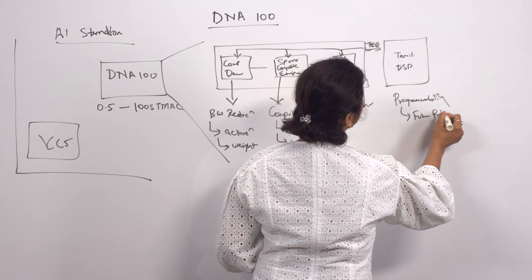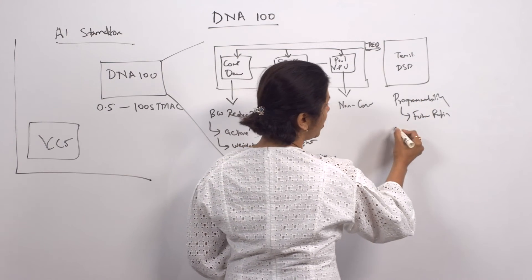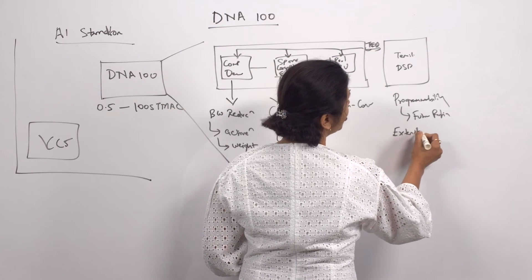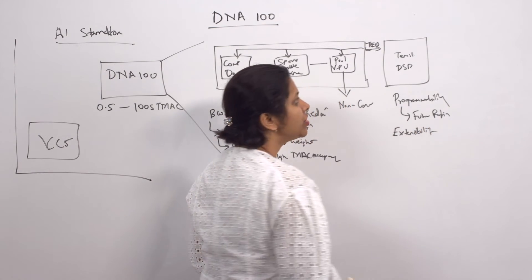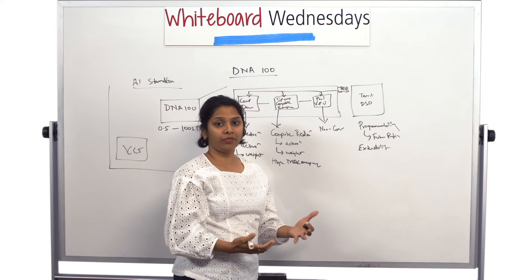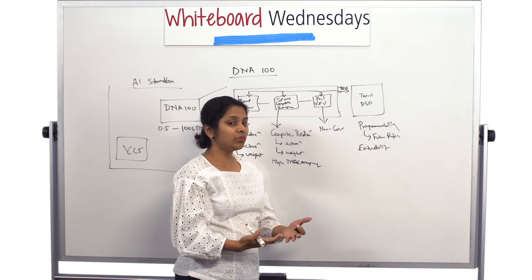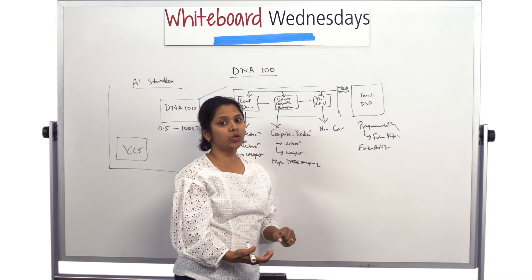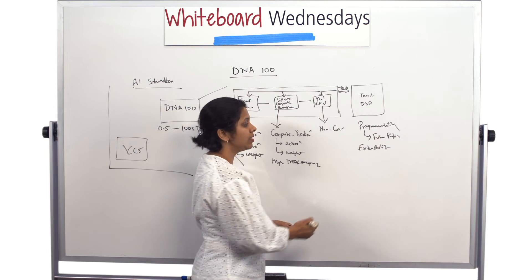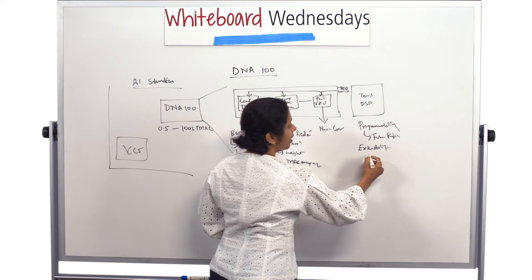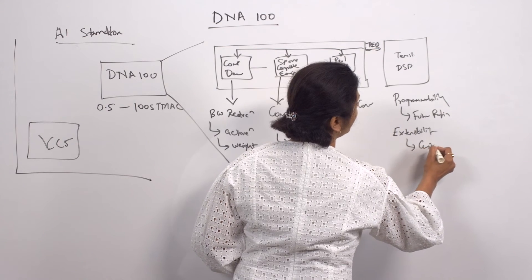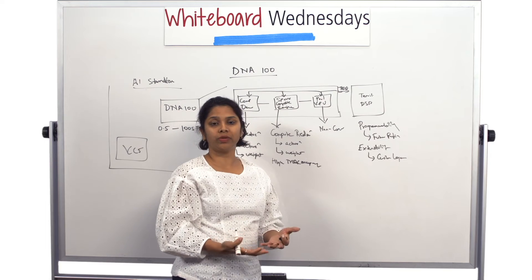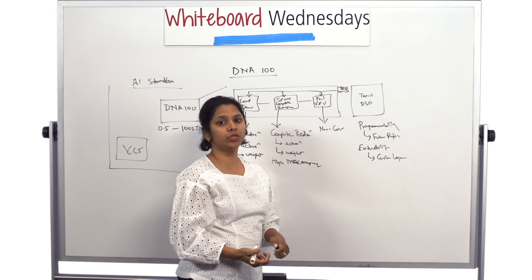Another thing this block brings is extensibility. Extensibility by having TIE extensions. TIE extension is something which is an inherent thing of our Xtensa cores. A customer can add their own custom instruction sets onto this DSP to cater to their own specific layers. That's what extensibility brings. And another thing it brings is the custom layers. Custom layers are something we get enabled through our neural network compiler and they can get used by over here.